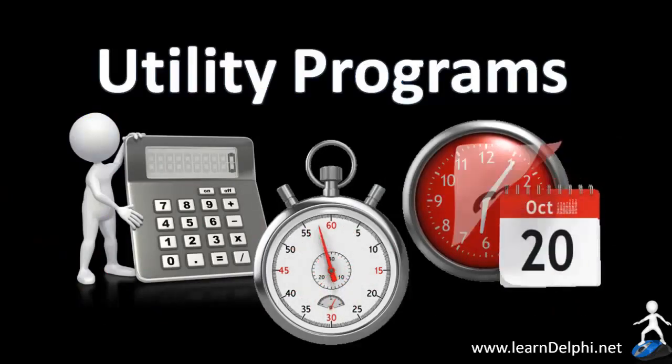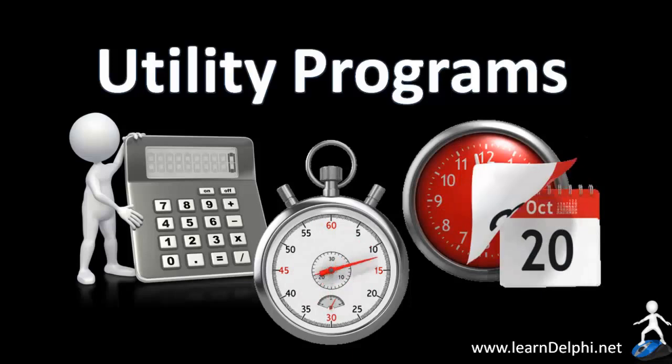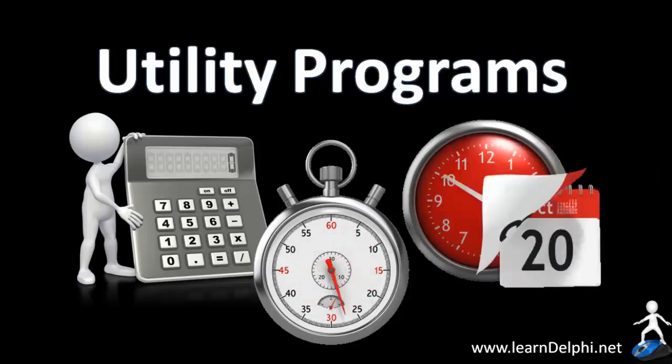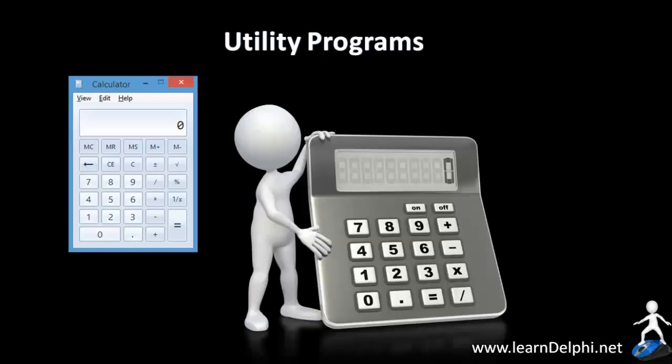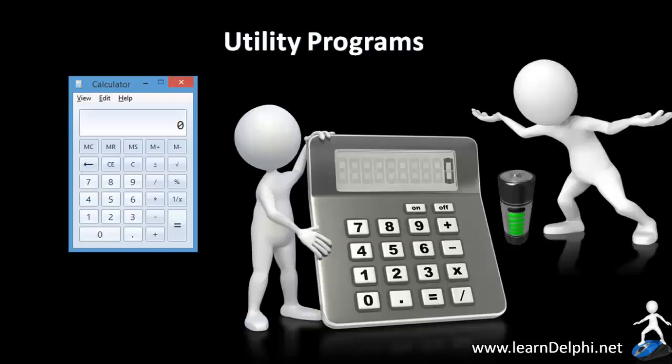Let's start with utility programs. These are the little programs that make our lives a lot easier. When you buy a new computer or load a new operating system like Windows, you also load a few utility programs. The Windows calculator is an example. When I was still in school, we only started to use calculators in high school. They were big and bulky and relied on battery power. Those old calculators were inconvenient because they had to be carried around in our bookcases. There were also other utilities we carried, like calendars and diaries, but most were misplaced or lost their purpose after a while.